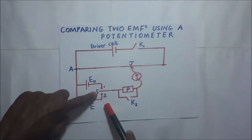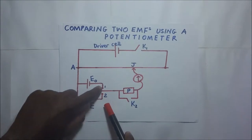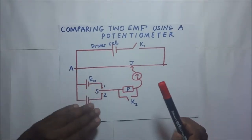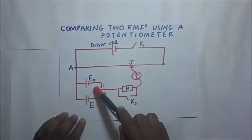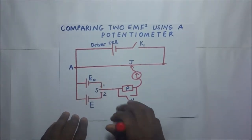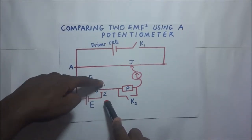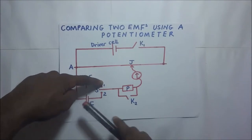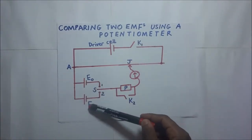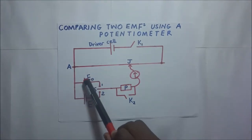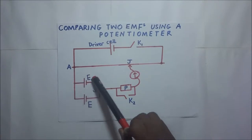We are going to be putting S to position 1, then position 2. When we put it on position 1, it means that we have rendered the lower part redundant and it is only the upper cell that is in the circuit. When we put switch S on position 2, it means that we have rendered the upper part redundant. E is a cell whose EMF is not known.